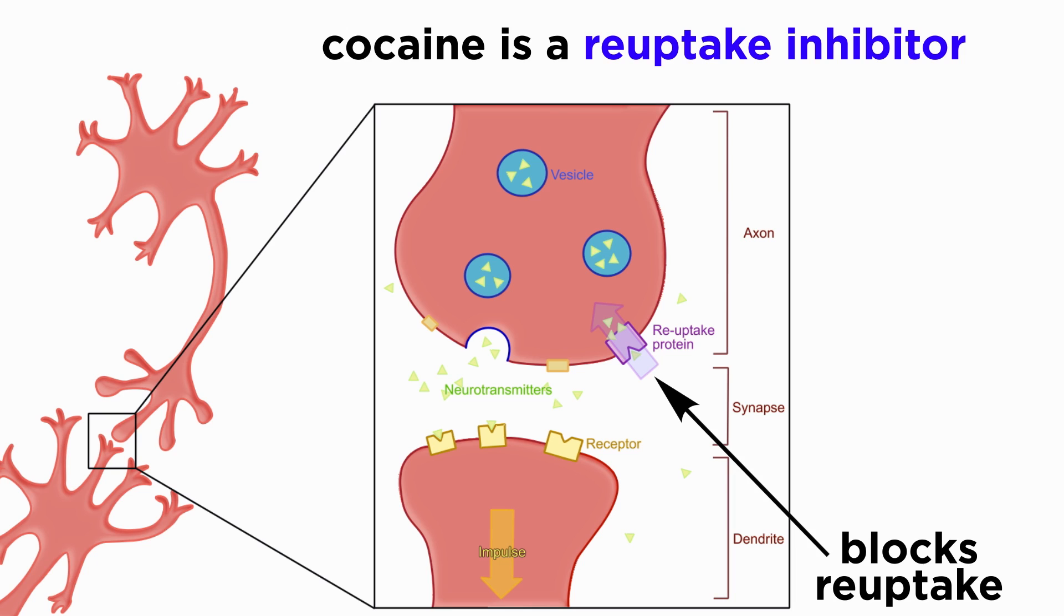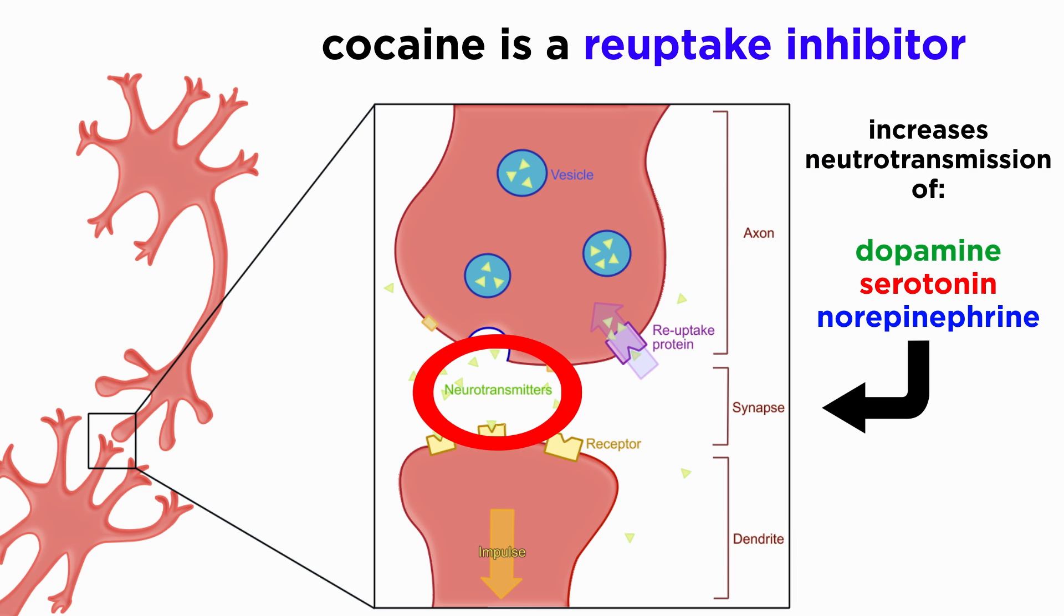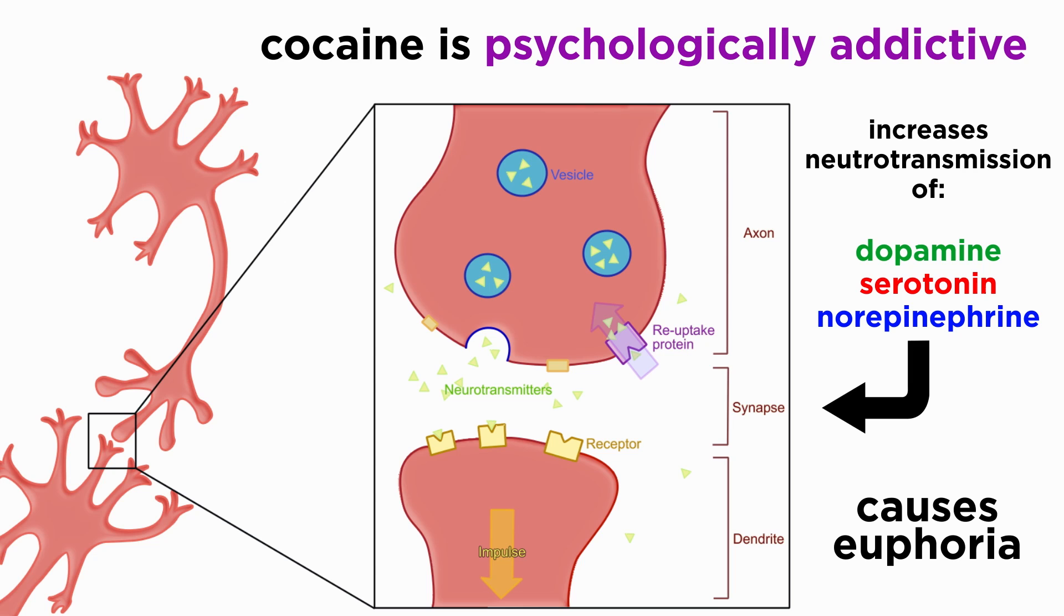Cocaine essentially operates as a reuptake inhibitor, which causes accumulation of the neurotransmitters dopamine, serotonin, and norepinephrine in the synaptic cleft. This accumulation is responsible for the feelings of euphoria associated with the drug. Cocaine does not have physical withdrawal symptoms, but it is nonetheless quite psychologically addictive, due to the reward pathway that it activates.